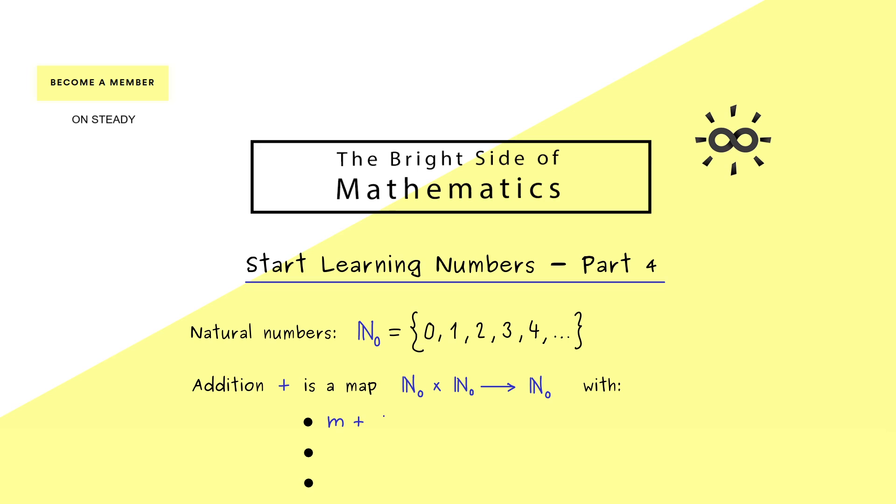The first one is if you add 0 you don't change the element. Therefore we call 0 the neutral element with respect to the addition or simply the identity element. Then the next property is the one we discussed in detail in the last video. It's the associative law which tells you that for 3 elements you can set the parentheses as you want.